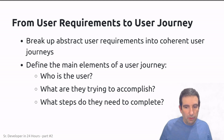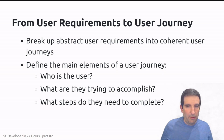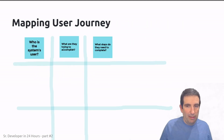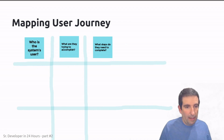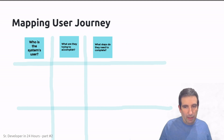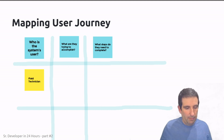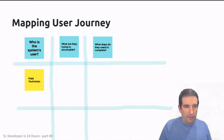To make this more understandable, I personally like to map user journeys — normally on a whiteboard, whether physical or virtual — and allow people to brainstorm and add their own ideas as we take user requirements and break them apart. We start by figuring out who the user is, and in this particular example the user we're going to use is a field technician.